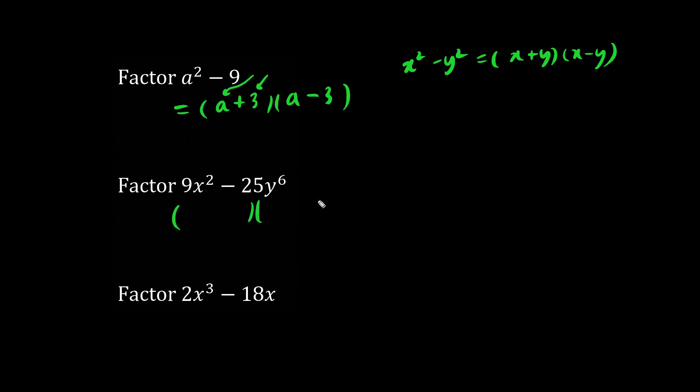So let's factor again with difference of squares. What times what is 9x squared? We have 3x times 3x is 9x squared. We write plus minus. And what times what becomes 25y to the 6th? We have 5y cubed.